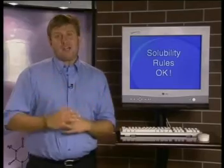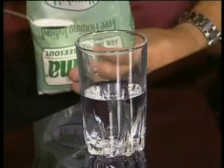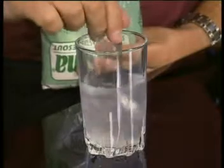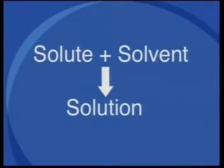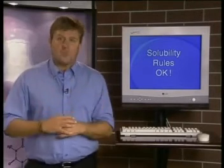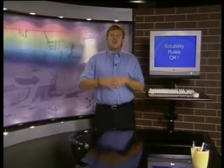Before we get going with some new ideas, let's recap on some important concepts. When sodium chloride is added to water, a solution is formed. The salt is called the solute, and the water is called the solvent. In other words, sodium chloride is soluble in water. A solute is soluble if it dissolves completely in a solvent. Although some salts are soluble in water, there are other salts that will not dissolve. These are known as insoluble salts.